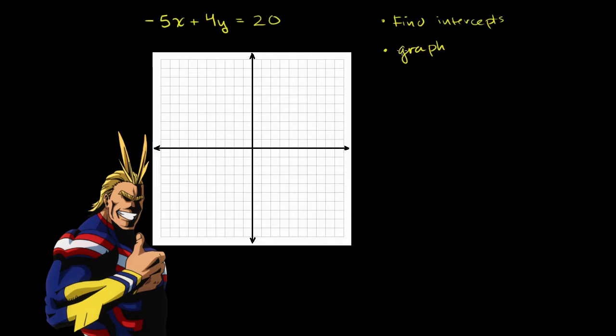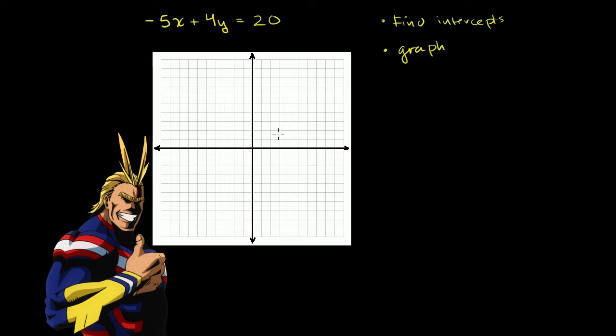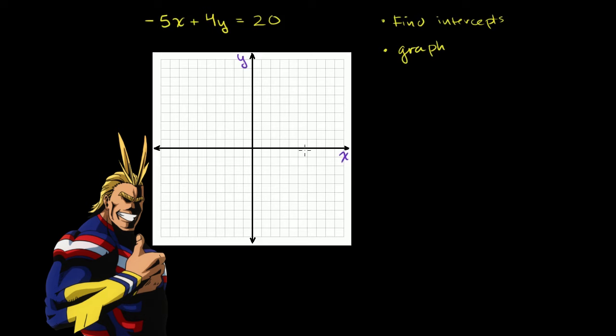So whenever someone talks about intercepts, they're talking about where you're intersecting the x and the y axes. So let me label my axes here. This is the x-axis, and that is the y-axis. And when I intersect the x-axis, what's going on? What is my y value when I'm at the x-axis?